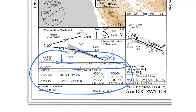Next, you have the category of approach. You have straight-in approaches, which have an S next to them. Or you can have circling approaches, which indicate that you'll be making the approach for one runway, however executing the circling procedure to land on the opposite or a different runway at the airport.